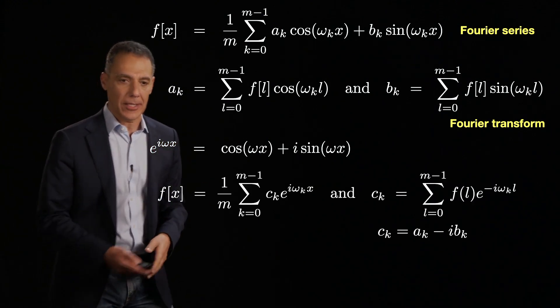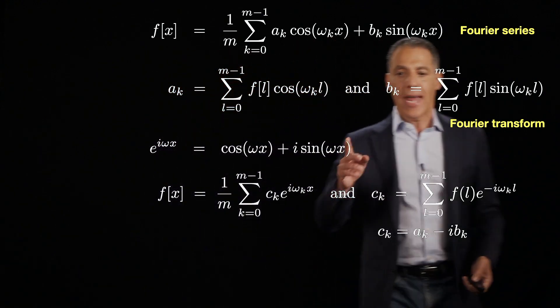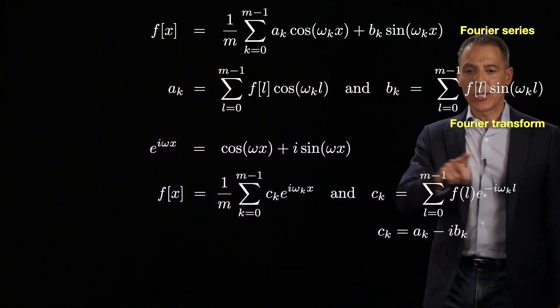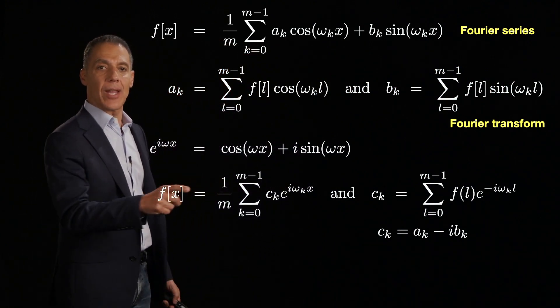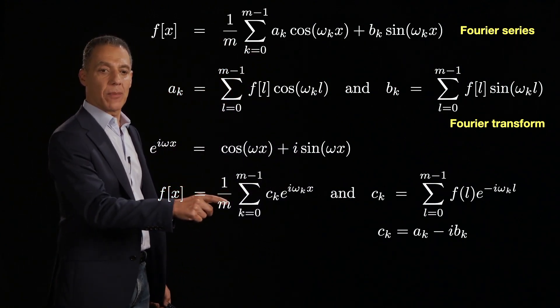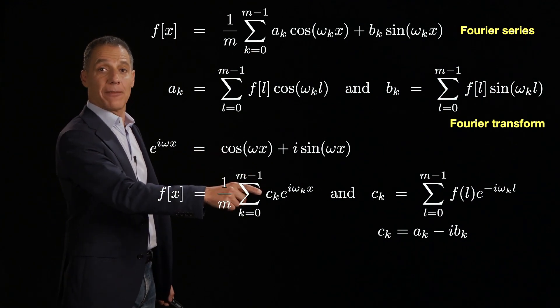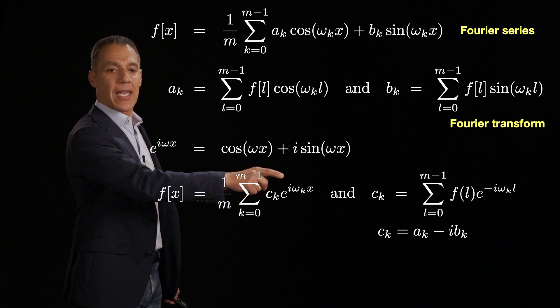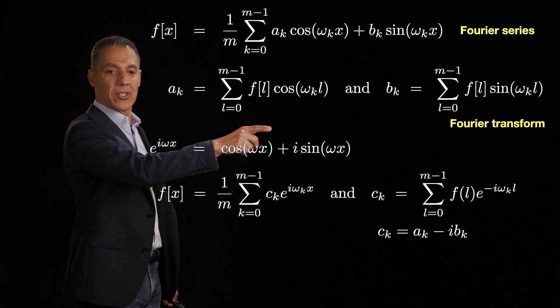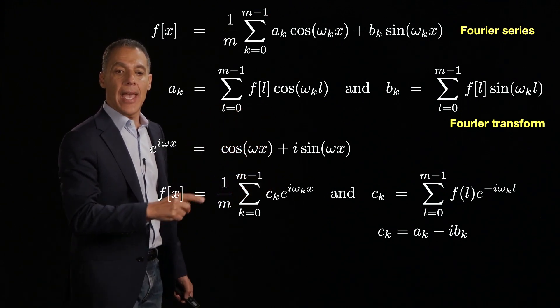So let's see what that's going to look like. So now what we're going to do is we're going to write our signal in terms of the complex exponential. So my signal f(x) is equal to 1/m, the sum from k equals 0 to m-1, same thing, scale factor c_k, and then e^(iω_k x).